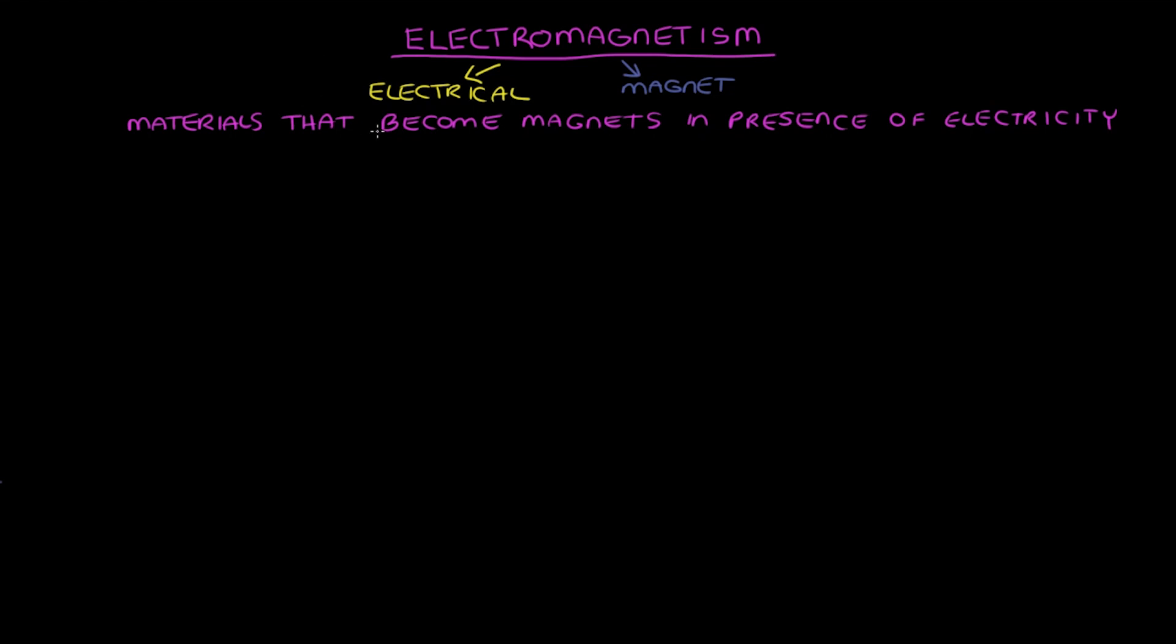So what is electromagnetism? Well, the hint is in the name itself. Electro for electrical and magnet for, well, magnet. Let's take a moment to look at the definition of what an electromagnet is. Electromagnets are materials that become magnets in the presence of electricity.